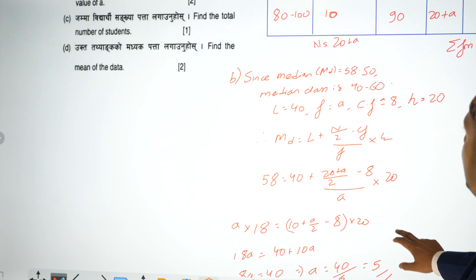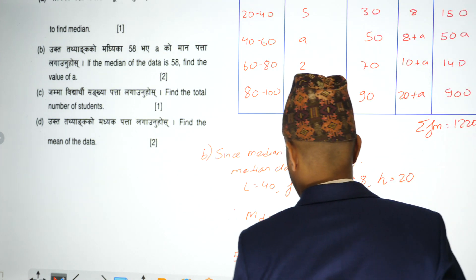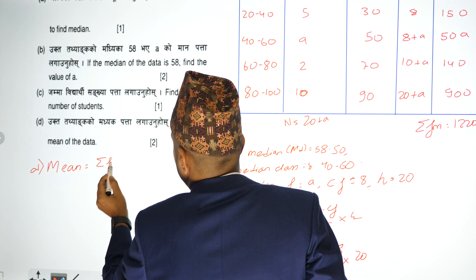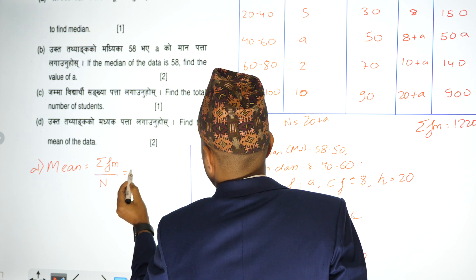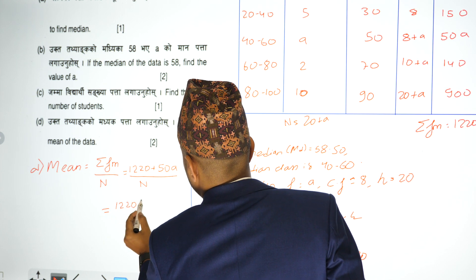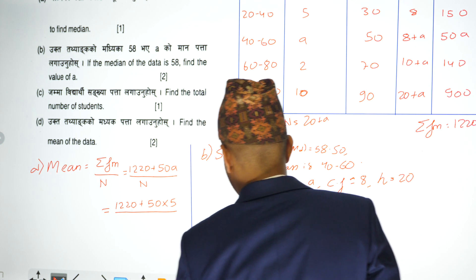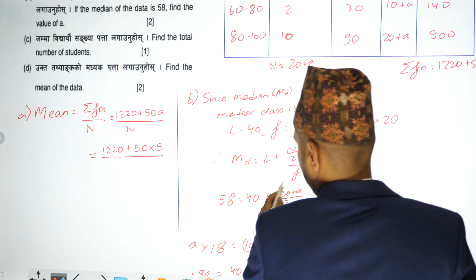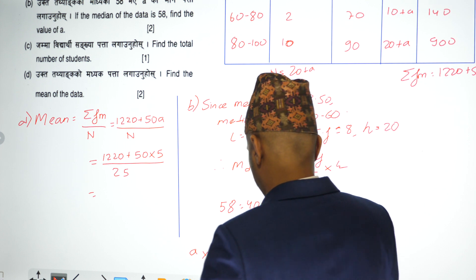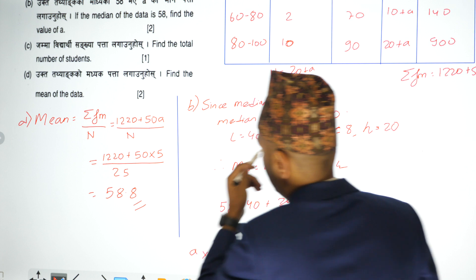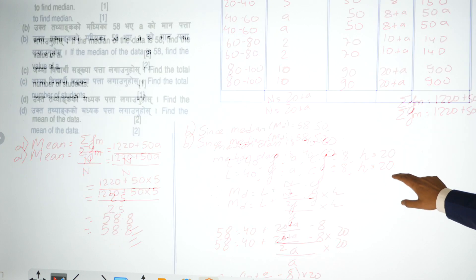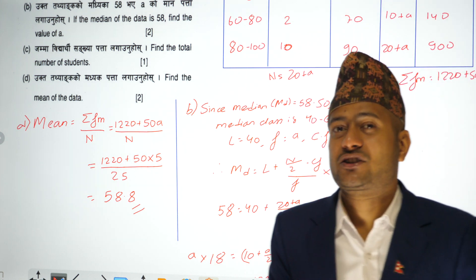Which means 20 plus 50A divided by 25, which means the mean of the data is 58.8. Simply to have A value, which means I get a value from the calculation, and the amount comes down to a constant.